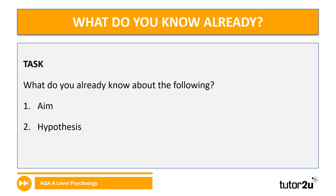Let's begin in terms of what you already know. What do you know about an aim and a piece of research — what's the point of it, what might it look like? What do you know about a hypothesis — what is it, what are the types, what's the difference between them? Anything you know can go in the space in your booklet next to question one. Pause the video for now.